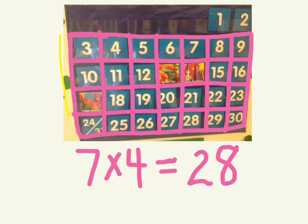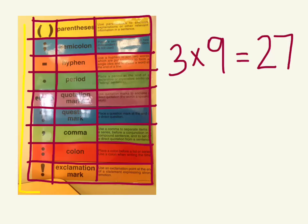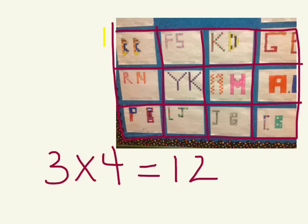4 times 7 is 28. 4 times 3 is 12. 9 times 3 is 27. 3 times 4 is 12.